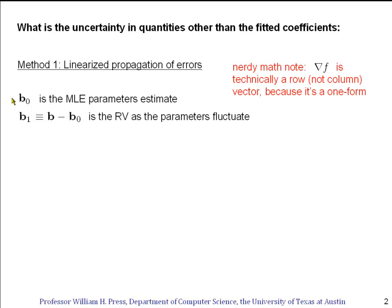So where are we? We've got a maximum likelihood estimate of the parameters, and that's a vector b0. But we know that the true parameters are not exactly our maximum likelihood estimate. There is some error. So there's a random variable b1, which is the small difference between the true values of the parameters and our maximum likelihood estimate. And b1 has a probability distribution. We've seen before that it is multivariate normal.